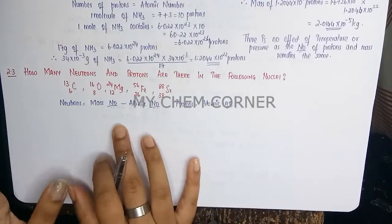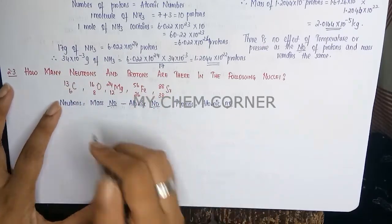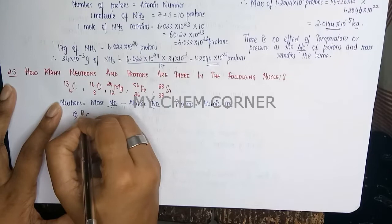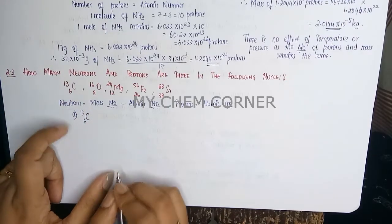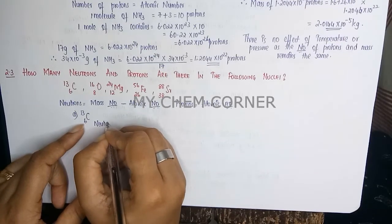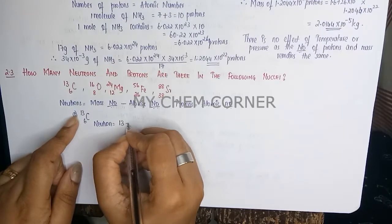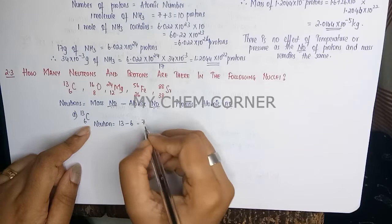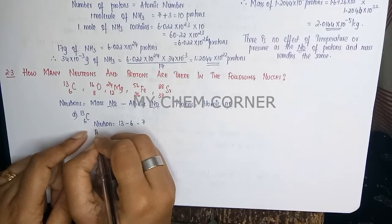Let's move into calculating for each element. For the first one, Carbon with a 13 isotope, to find the number of neutrons: mass number is 13 minus atomic number is 6. When we simplify, you get 7. So number of neutrons is going to be 7, whereas proton is just the atomic number.